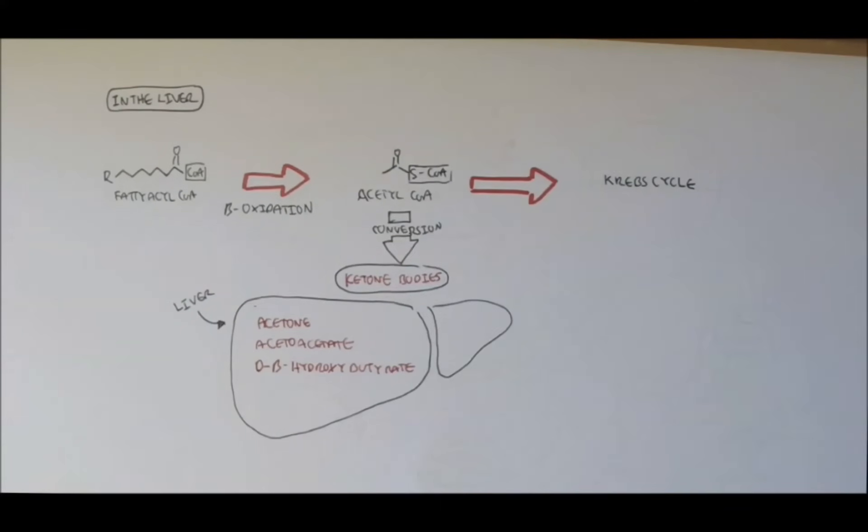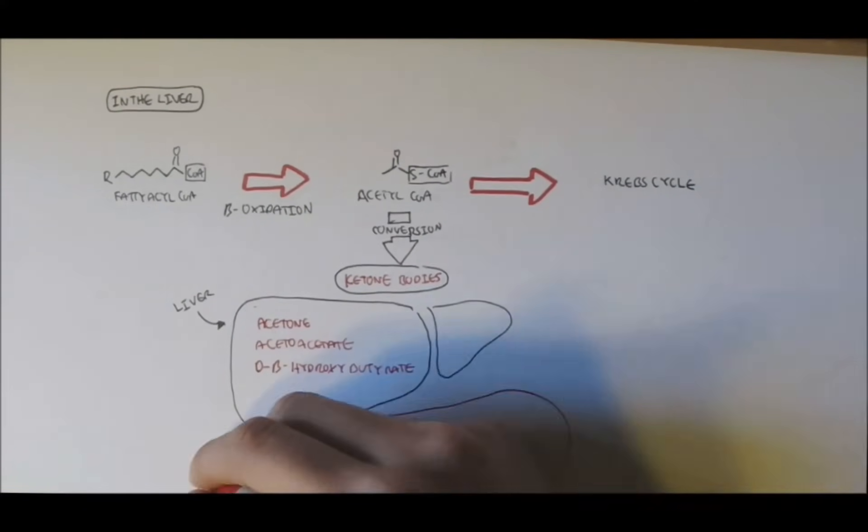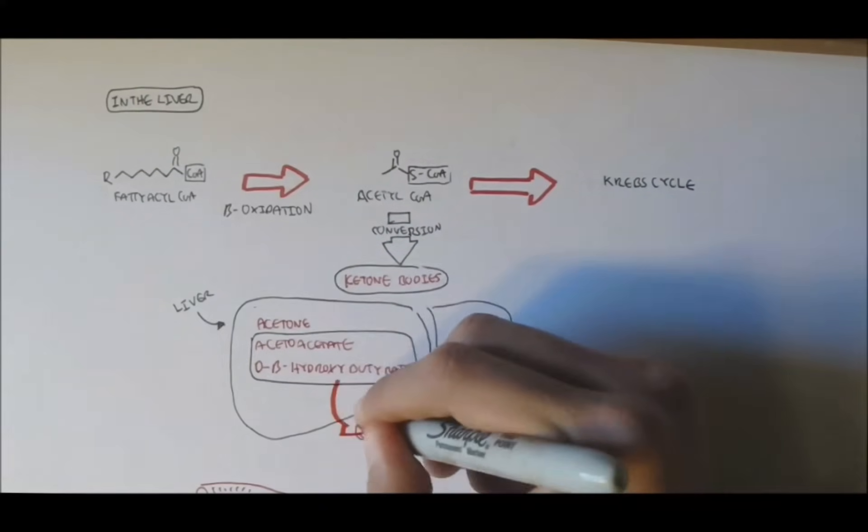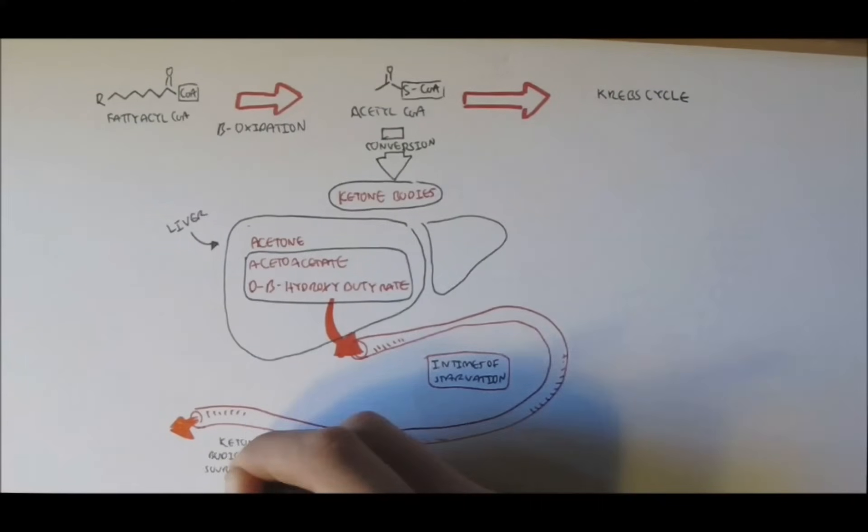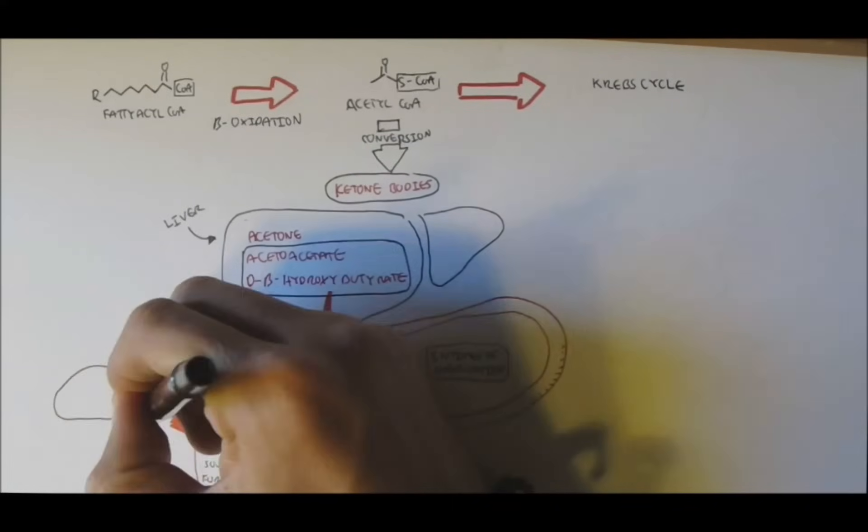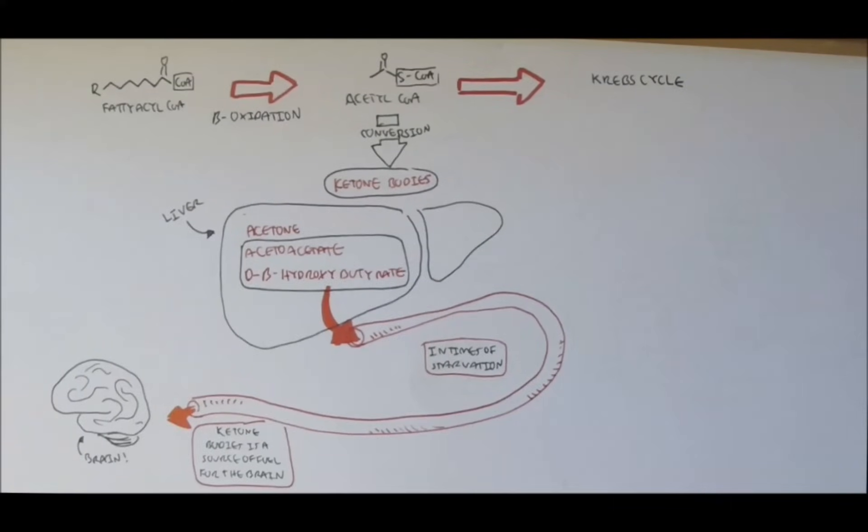Now what good are ketone bodies? Well, the liver can put these ketone bodies, particularly acetone and D-beta-hydroxybutyrate, through the bloodstream, because in times of starvation, ketone bodies can be a source of fuel for the brain when glucose is not available. So ketone bodies can travel from the liver to the brain for fuel during starvation.